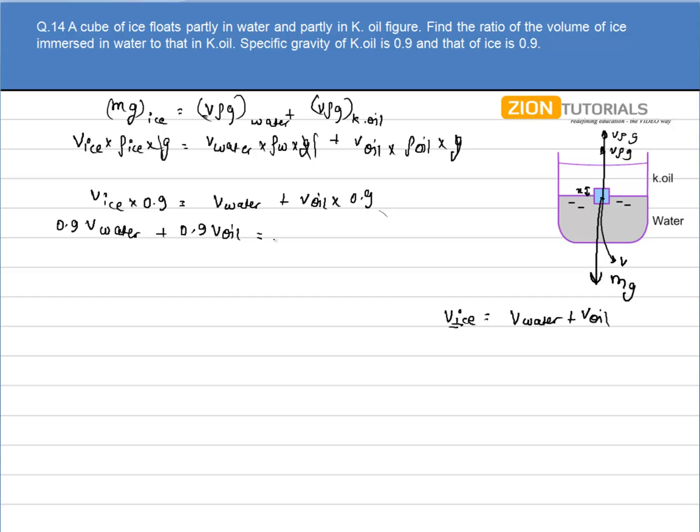This shows that the volume that is submerged in water is equal to the volume that is submerged in kerosene oil. So the ratio of the volumes.